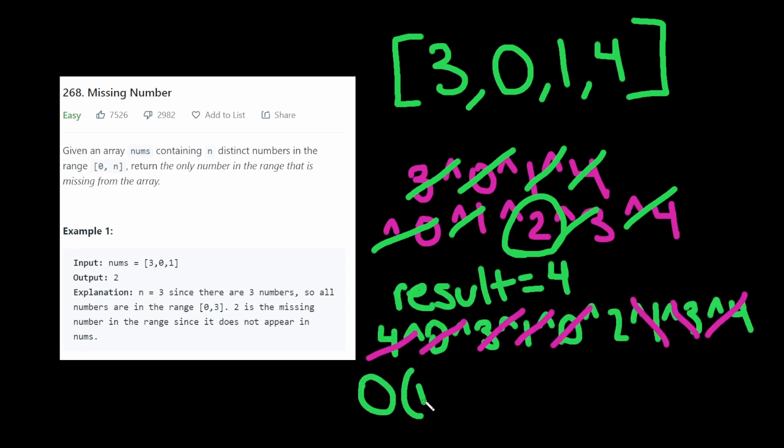And time complexity here is O of n, because we're just looping through the array once. Space complexity here is O of 1, because all we're doing is keeping track of this result, pushing all the XOR operations into it.